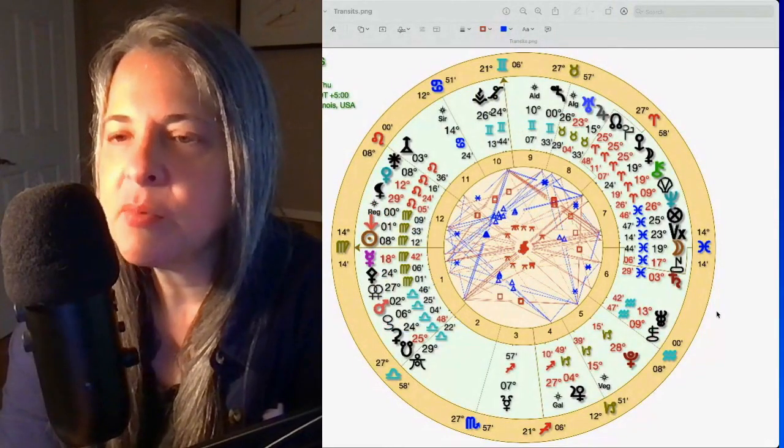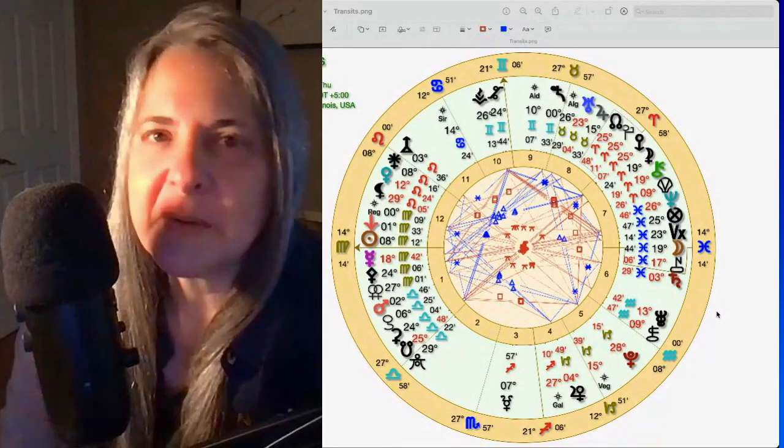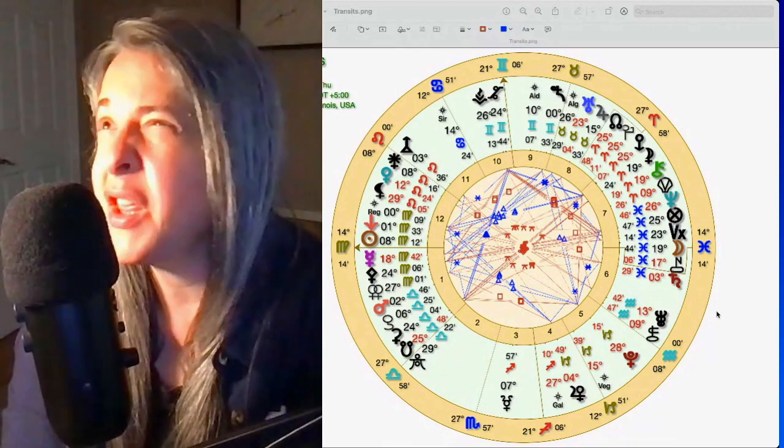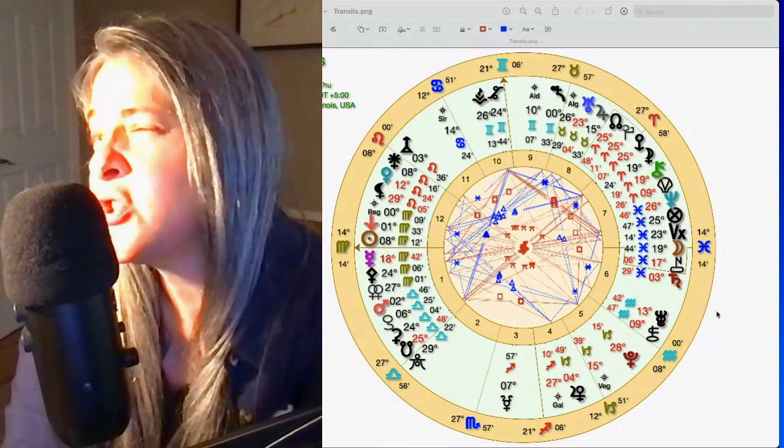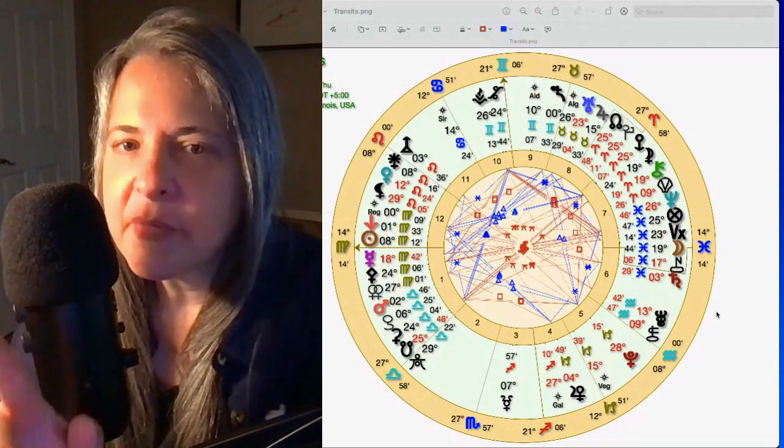We have a timeline where Mercury begins its retrograde. Actually, Mercury's already begun its retrograde. Let's be clear, that happened around August 23rd, I believe. So I threw a chart up.